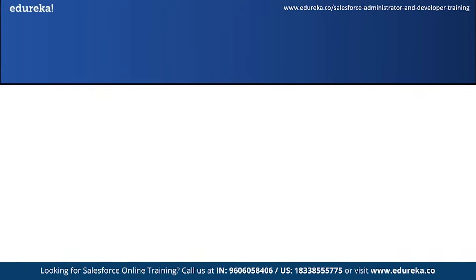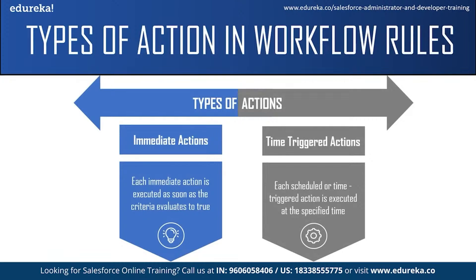There are two types of workflow actions which vary with the time these actions are executed. First are immediate actions, which are performed right after the criteria is met. The second are time-triggered actions, which are performed after a set time interval. For example, you can automate a workflow rule to send an email 30 minutes after an account is created.